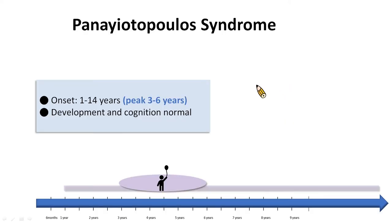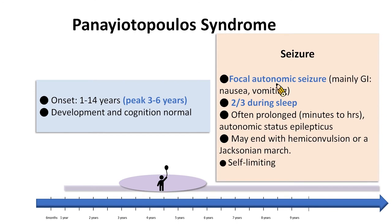The second example is Panayiotopoulos syndrome, which is characterized by onset of seizures peaking at 3 to 6 years of age. Development and cognition are normal. The mandatory seizure type is the focal autonomic seizure. The autonomic features are mainly gastrointestinal, including nausea and vomiting, which could be mistaken for acute gastroenteritis. Two-thirds of seizures start in sleep. The seizures are often prolonged; as they evolve, loss of consciousness, eye deviation, and hemiconvulsion may occur. The seizures are self-limiting and usually resolved by adolescence.